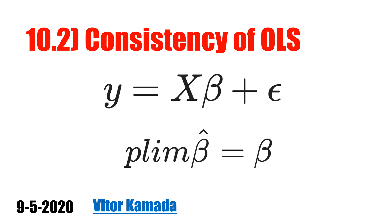The probability limit of beta hat equals beta, and the estimator of beta has the lowest variance as possible. The second property about the variance will be the object of another video.